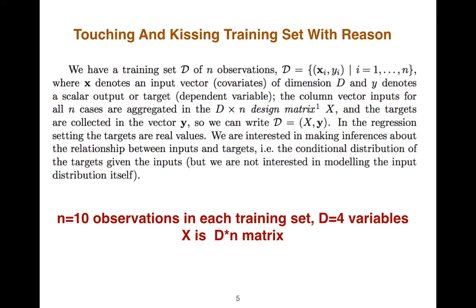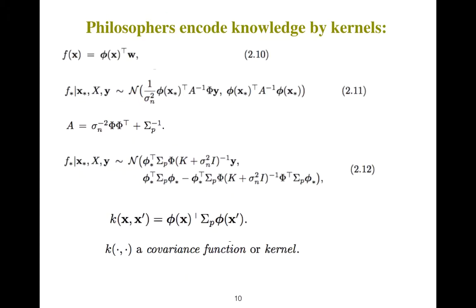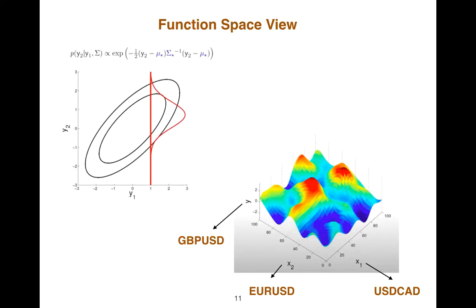So we have 10 observations in each training set and four variables. Our variables could be USDCAD, EURUSD, and the dependent variable is GBPUSD.